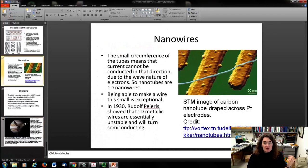The small circumference of the tubes means that current can't be conducted in the lateral directions; it can only be conducted along the wire, so basically you've got yourself a one-dimensional nanowire. Being able to make a wire that small is really fascinating and exceptional. There's all kinds of applications for these things. They're being used for field effect transistors on the nanoscale and a lot of other really cool stuff. This is an STM image I show here at right of a carbon nanotube draped across some platinum electrodes, actually being able to conduct electricity between those electrodes. Really fascinating stuff.